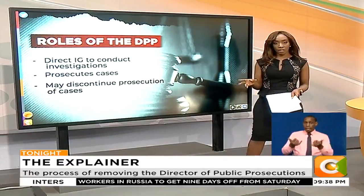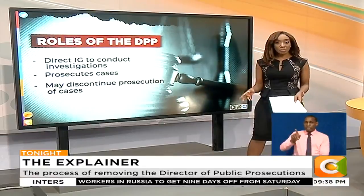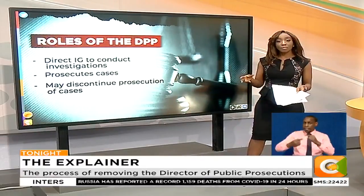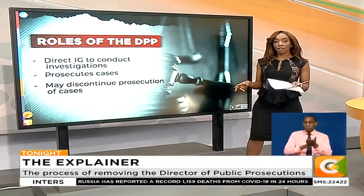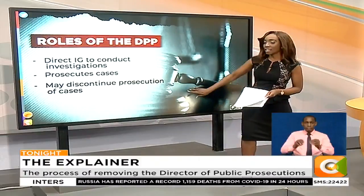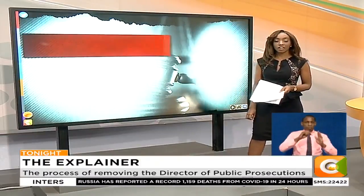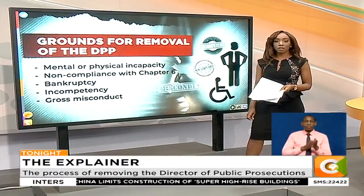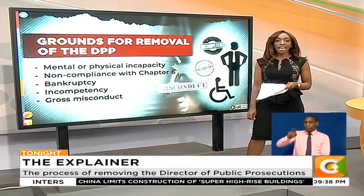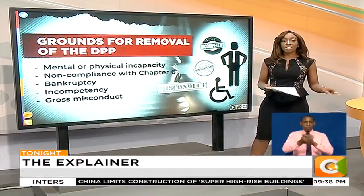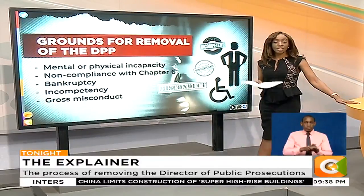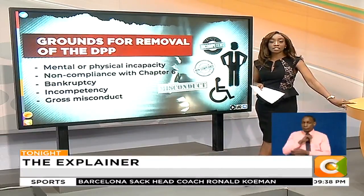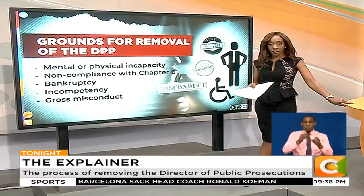Whilst the holder of the office of the DPP enjoys independence and a non-renewable term of eight years, there are prescribed methods for their removal, and again, this is outlined in the Constitution. Anyone desiring the removal of the Director of Public Prosecutions heads to the Public Service Commission, where they set out the facts in writing, laying the grounds for removal. This is what the two petitioners have done so far.